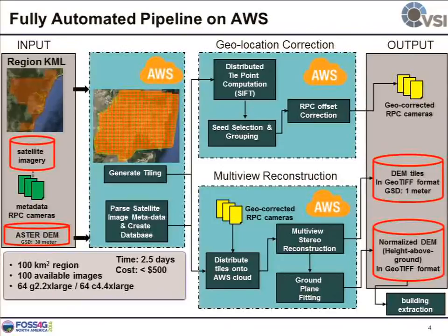To give an idea about the cost: the entire system we developed is fully open source, so the only money you have to spend is renting the AWS service — that includes S3 or EC2 instance costs. For example, if you want to construct a 100-square-kilometer region using 100 geo-corrected satellite images, it's going to take a few days and less than $500.